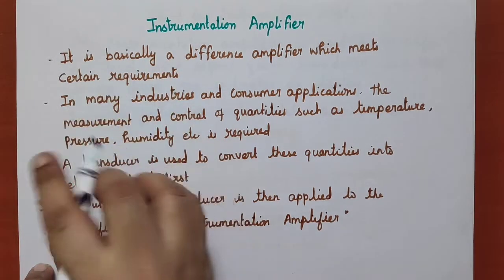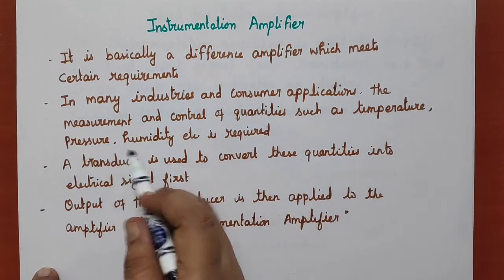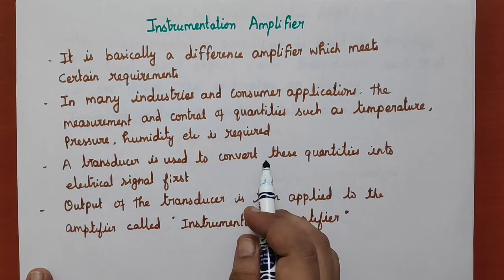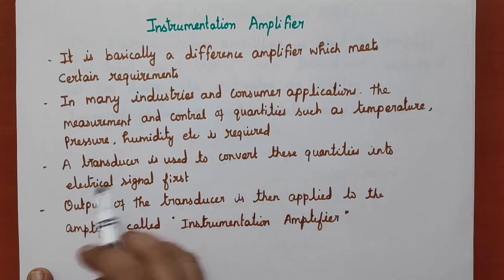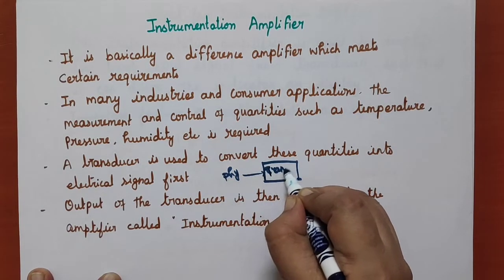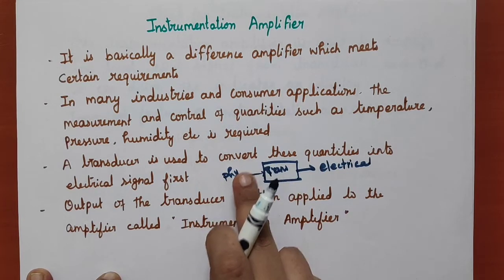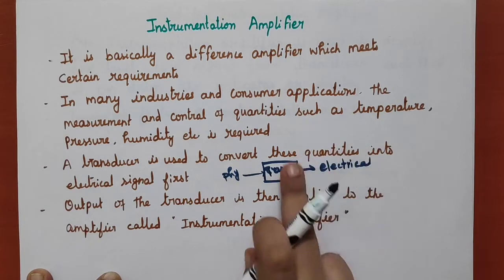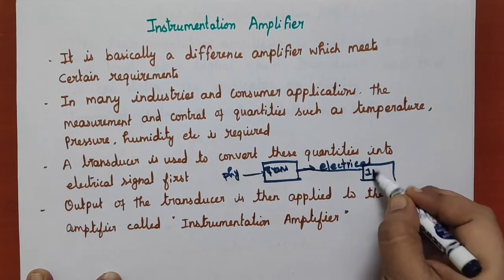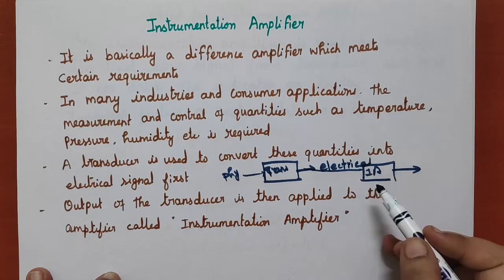In many industry and consumer applications, we need to measure and control some physical quantities like temperature, pressure, humidity, etc. Even a small change in the physical quantity has to be measured and reported. To measure the physical quantity we need a transducer, which converts the physical quantity into an electrical signal. If the change is very minimum, the transducer will give output in millivolts or microvolts. It should be amplified first to monitor industrial plants. Instrumentation amplifier is used to amplify the low level signal from the transducer, acting as a pre-amplifier.